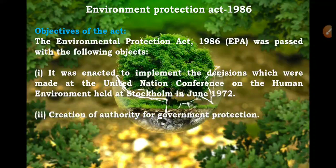The second objective is the creation of authority for environmental protection. The government requires some authority for protection. In order to safeguard the environment, the government requires certain protection from public and other hazardous substances. So one objective of the Act is to create such an authority which will protect the environment.